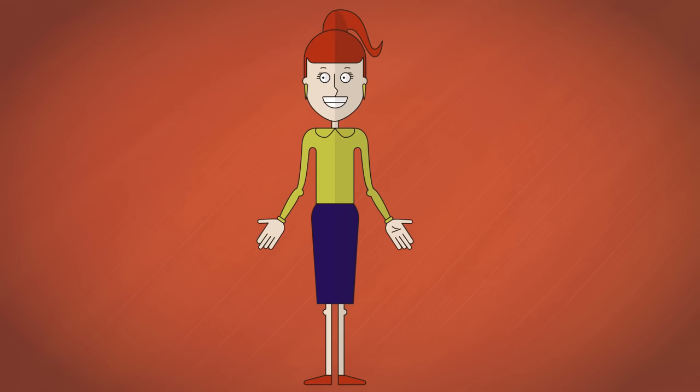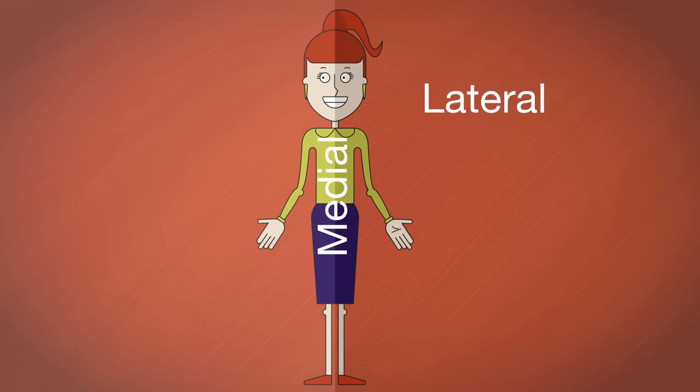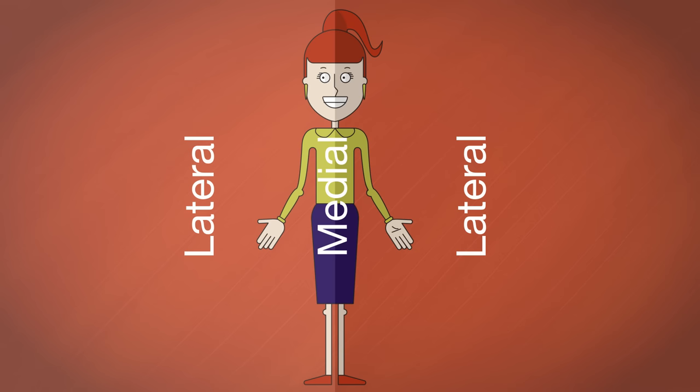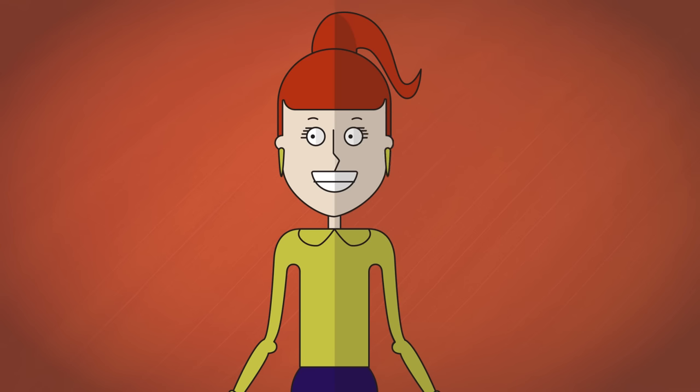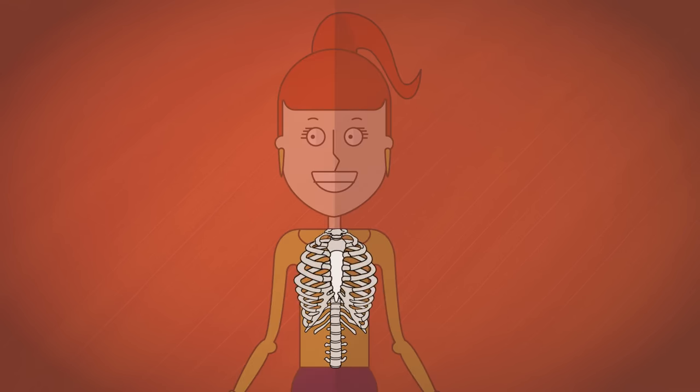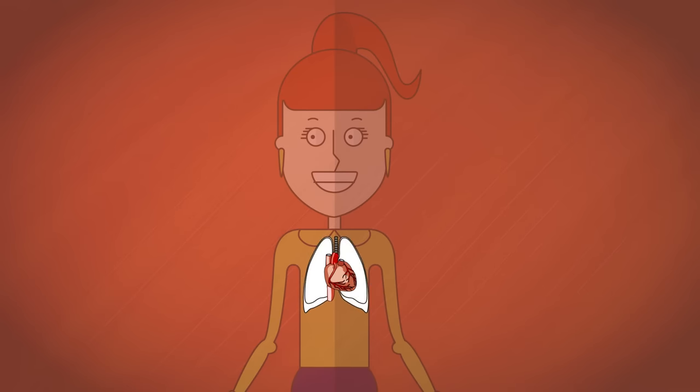Now it's time to define the terms medial and lateral. Medial refers to the position that is closer to the imaginary midline of the body. Lateral describes a position that is farther away from the midline. For example, the eyes are medial to the ears, and the ears are lateral to the eyes. The ribs are lateral to the sternum, and the heart is medial to the lungs.